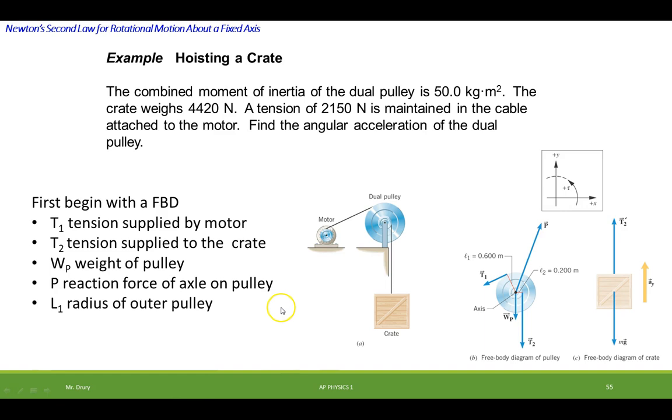L1 is the radius of the outer pulley, which is located right here. And here's the inner pulley. So there's two different pulley sizes, and they're attached at different locations. Like the crate is attached on the inner pulley, and the motor is attached on the outer pulley.